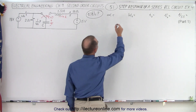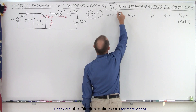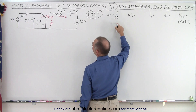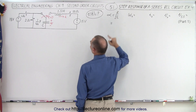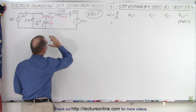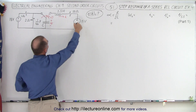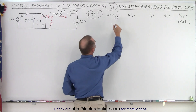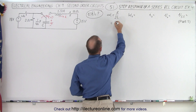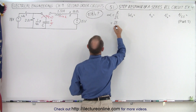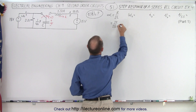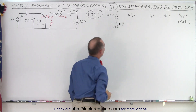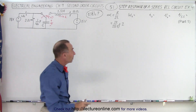Let's find alpha. Alpha by definition is R over 2L. Once the switch goes to the other side, we're dealing with the new circuit, and the relevant resistor is 10 ohms. So alpha equals 10 divided by 2 times 2.5, which equals 2. Alpha equals positive 2.